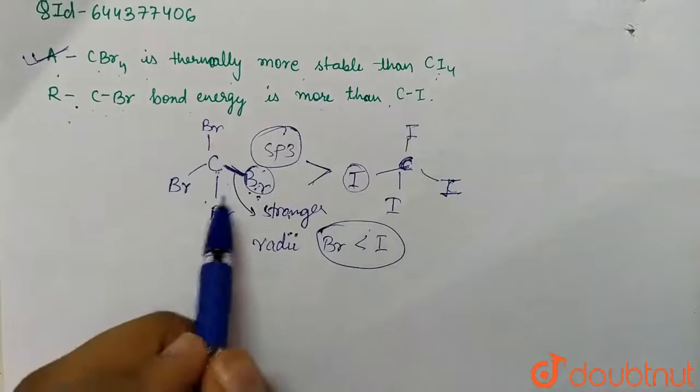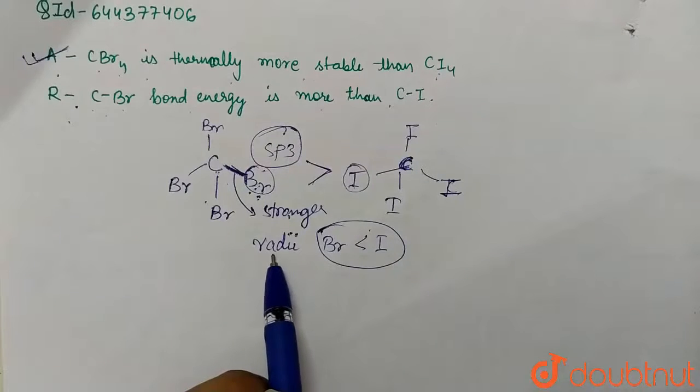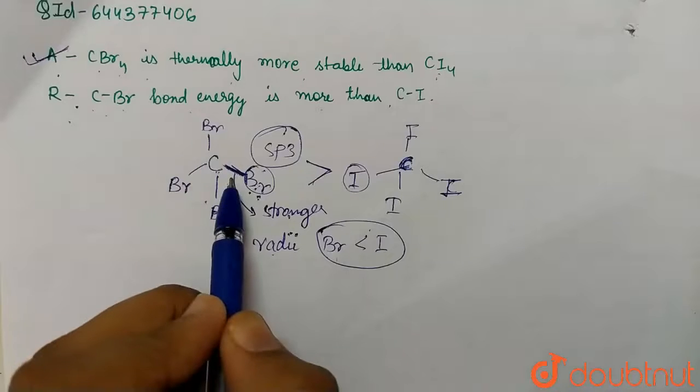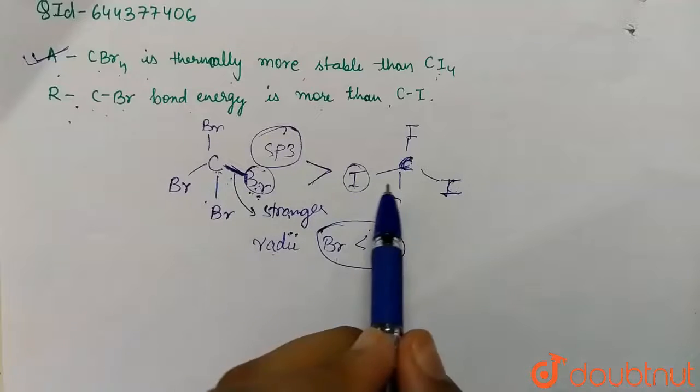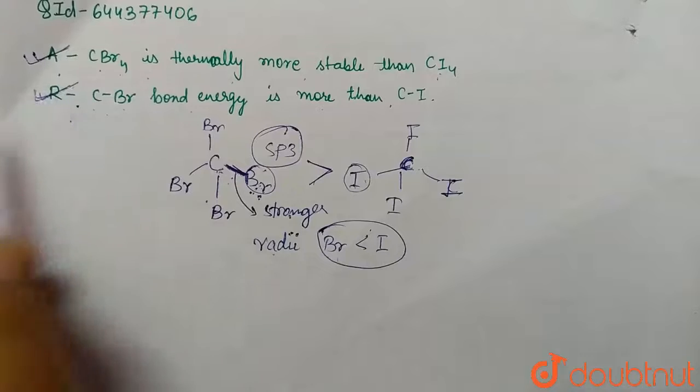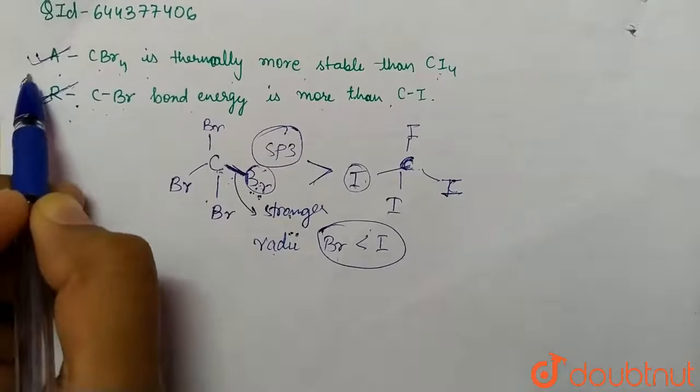Now for the reason: C-Br bond energy is more than that of C-I. As I have shown, due to the smaller size of bromine, this bond energy is greater than that of C-I bond energy. So the reason is also correct and reason is the correct explanation of the given assertion.